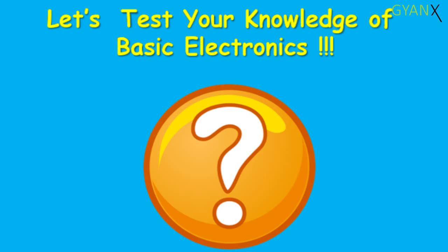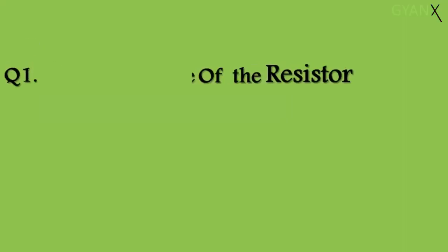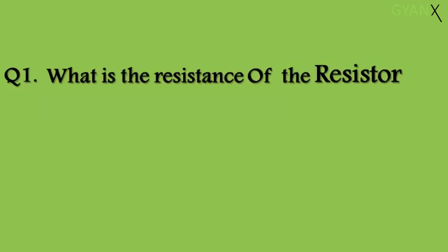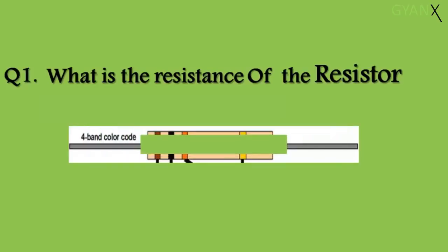Before proceeding to gates, let me test your knowledge of basic electronics that we covered in our previous classes. Your first question is: what is the resistance of the resistor shown on your screen? Your hint is: use the concepts of color code.